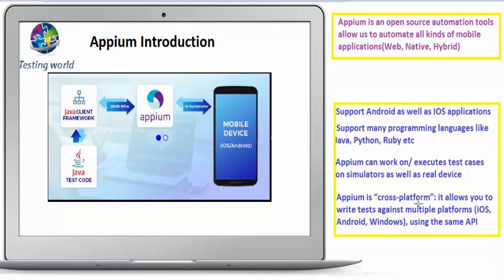APM is cross-platform — it allows us to write test cases for multiple platforms including iOS, Android, and Windows using the same API. Think of it as a single library by which we can write test cases for Android, iOS, and Windows. It is not a separate library for each platform; it is one single library we can use to automate test cases across all three platforms.